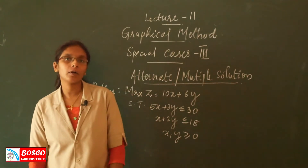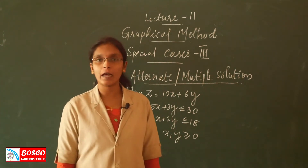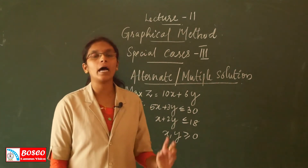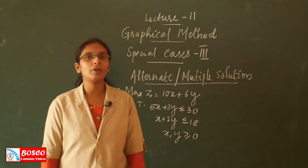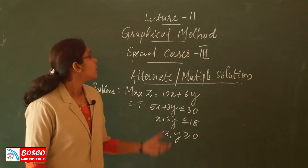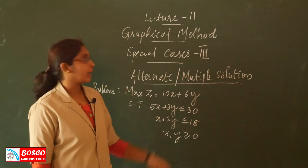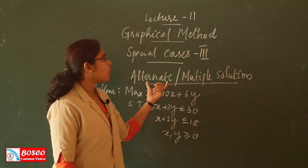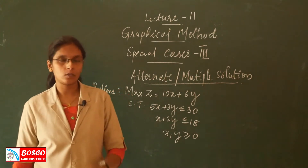In the last class, we had discussed about the second special case on the graphical method, that is the unbounded solution. In today's session, we are trying to discuss about a third special case on the graphical method, that is the alternate or multiple optimal solution.